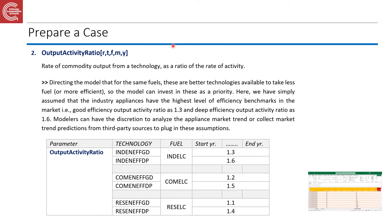The next core parameter we will be working with is the Output Activity Ratio. Similarly, it is a function of region, technology, fuel, mode of operation, and year, and is one of the major parameters for which we will be plugging in numbers. This is the parameter through which we define the efficiency of each technology. Please pause the video and have a closer look at this passage to understand how we have simplified the efficiency levels into the Output Activity Ratio.